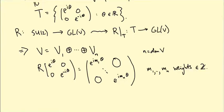So we're not saying that V splits into one dimensional representations of SU2. We're just saying if you restrict attention to these diagonal matrices, then we have this decomposition.